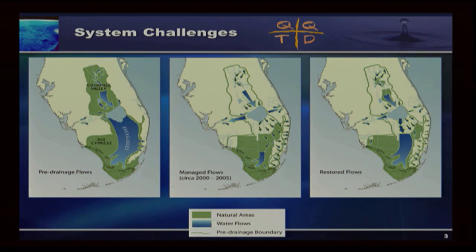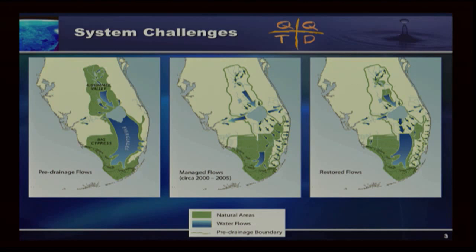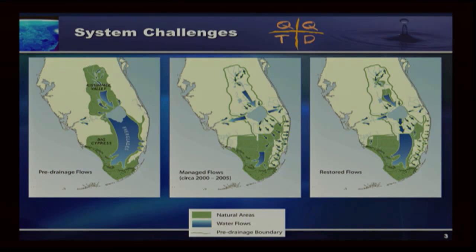We're inching our way toward the restored-flows condition shown on the far side. The water conservation areas are now compartmentalized and water flows through canals rather than as sheet flow — something we really need to regain so the Everglades can regain its classic characteristic as a river of grass. Our ridges and sloughs are filling in. At the top end it's too dry; at the bottom end it's too wet. Water for Everglades National Park is predominantly going to the west side, and we need to shift that flow to the east side.